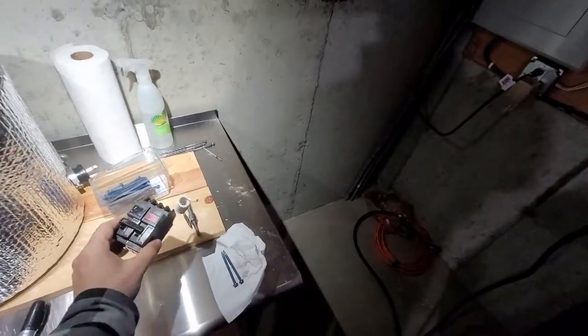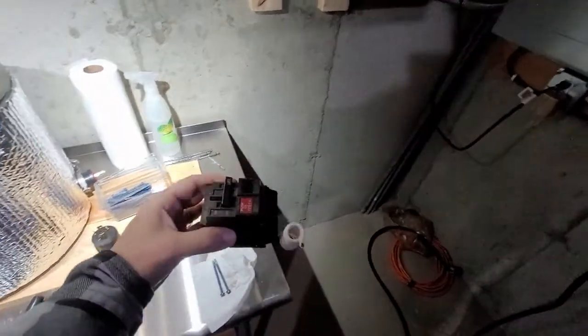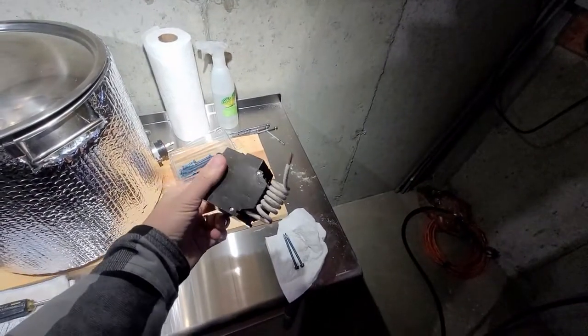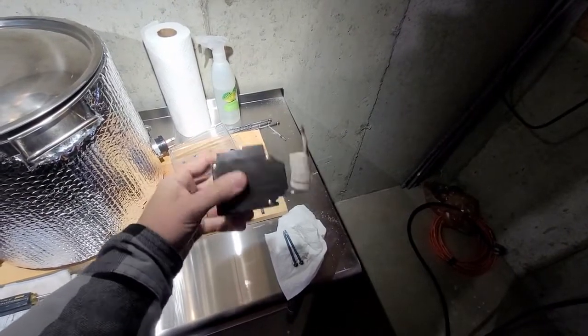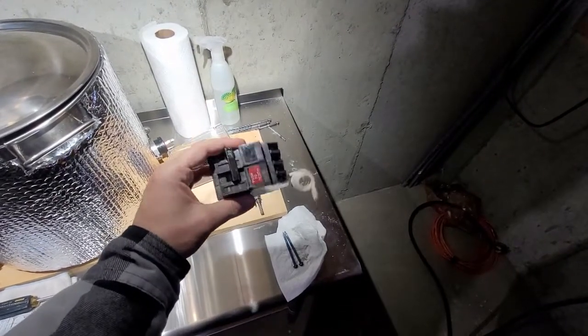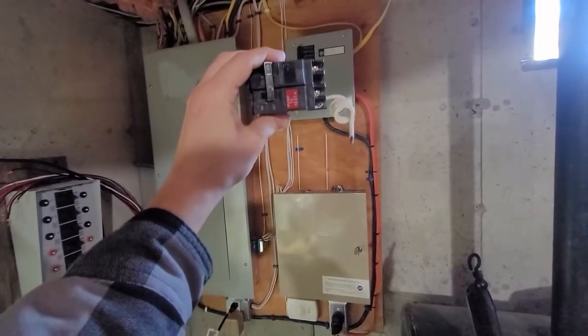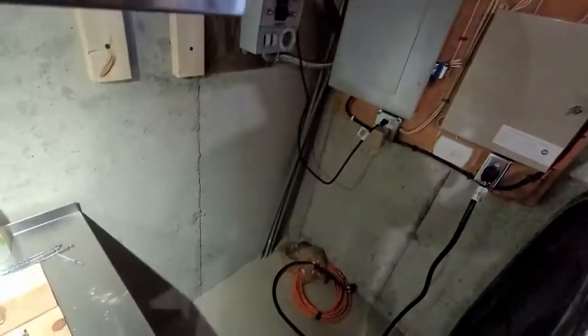But right now I just have a standard double pole breaker in there. I have to install one of these - this is what is called a GFCI breaker here. This will trip a lot quicker than a standard 30 amp if it really sees a ground fault. So I'm going to have to install this first before I use it with the brewery. I'll just replace that one double pole 30 amp.